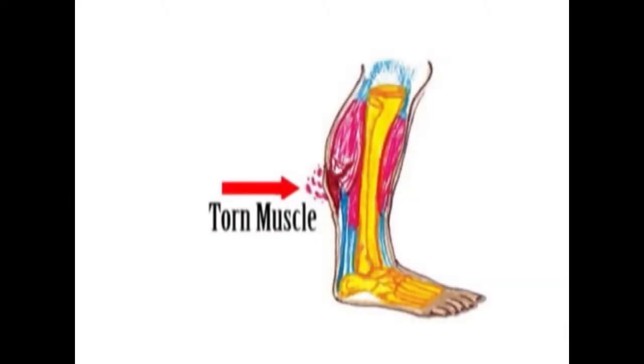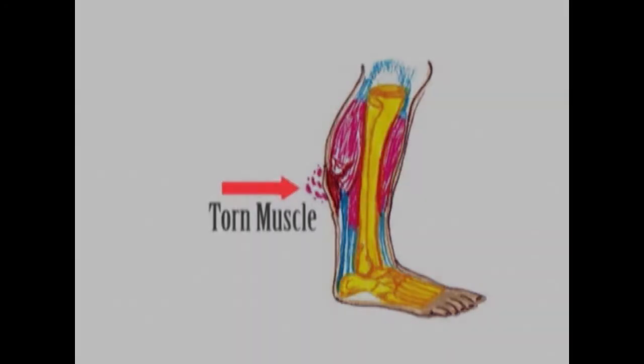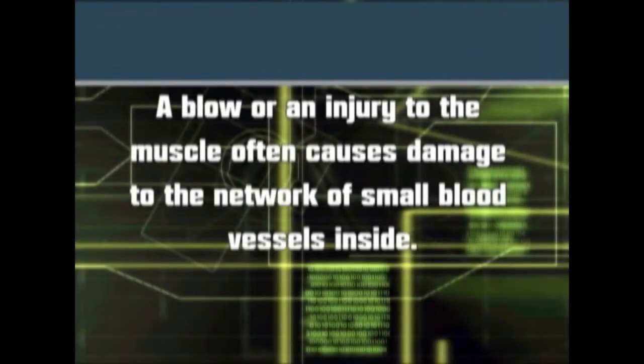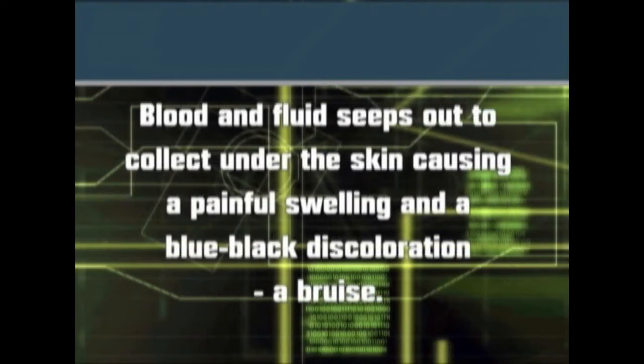Torn muscle. A blow or an injury to the muscle often causes damage to the network of small blood vessels inside. Blood and fluid seep out to collect under the skin, causing a painful swelling and a blue-black discoloration — a bruise.